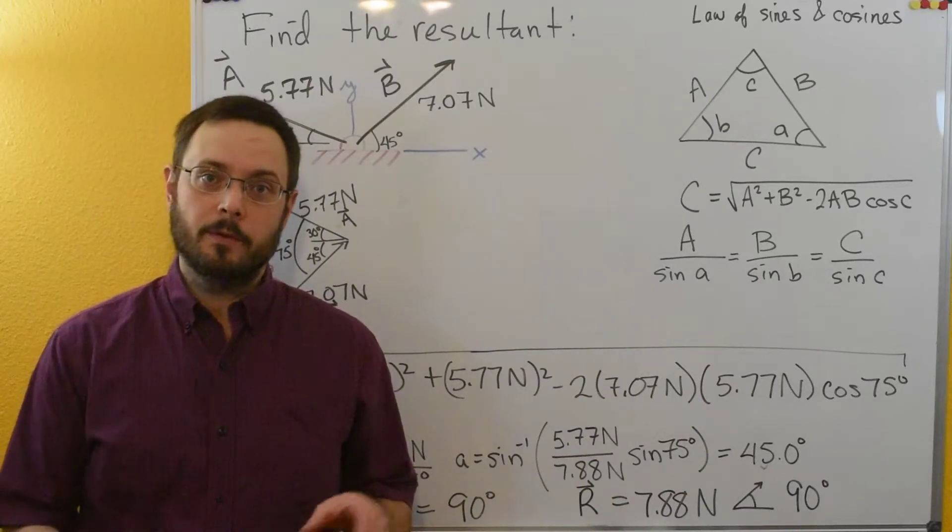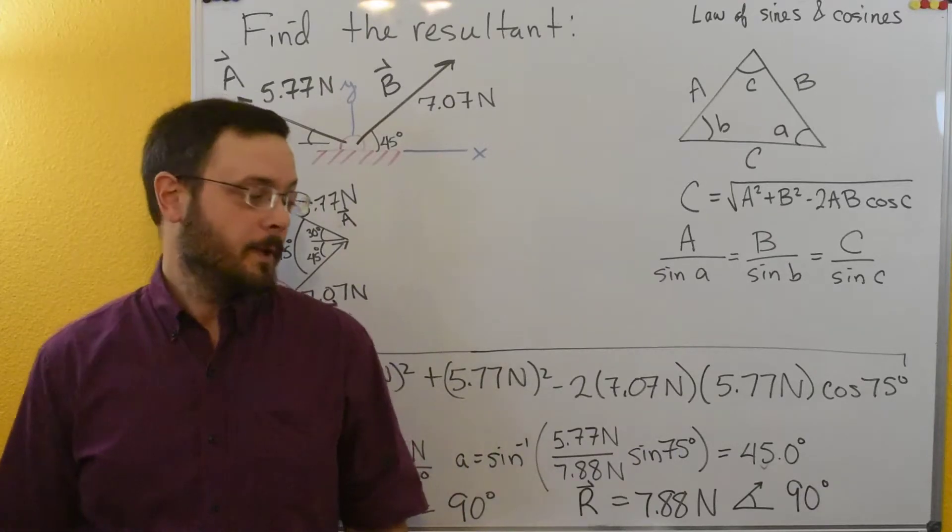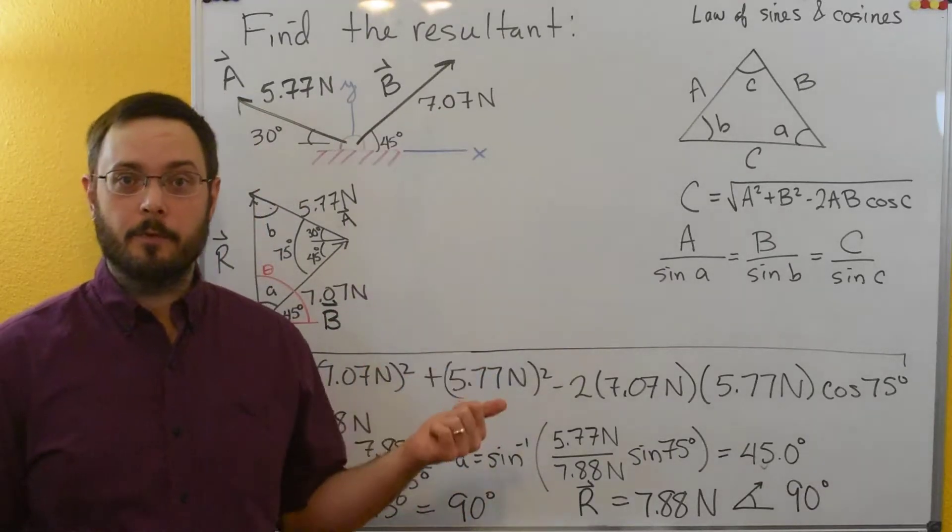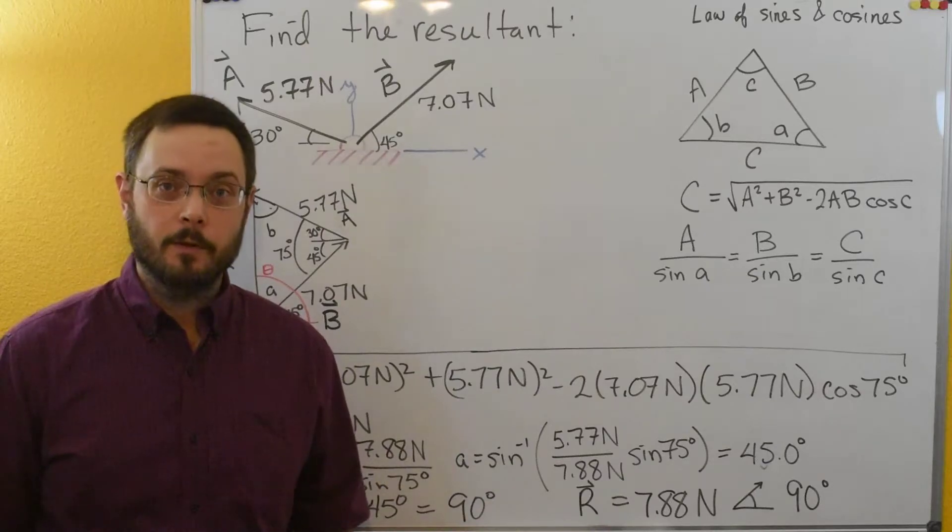It's just with the parallelogram method you get the two triangles and so you just solve the either the top or the bottom. With the triangle method you only get the one triangle.